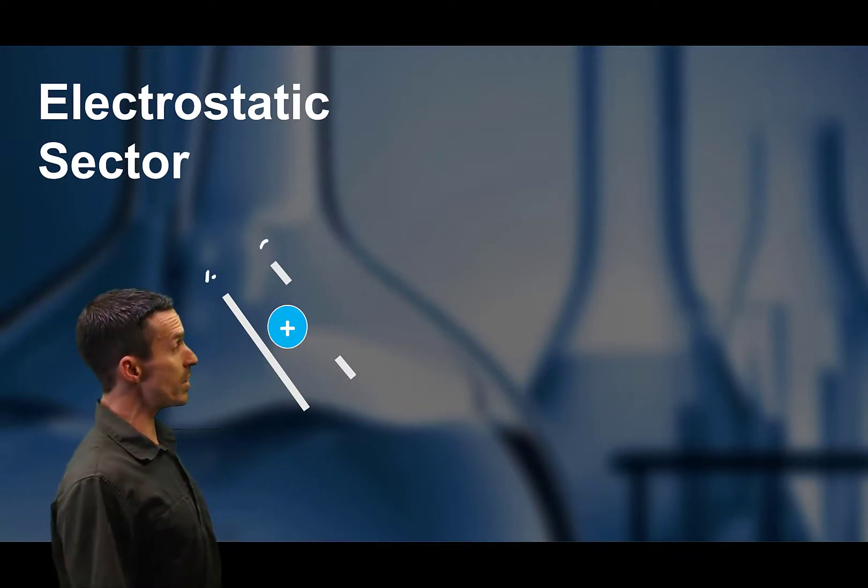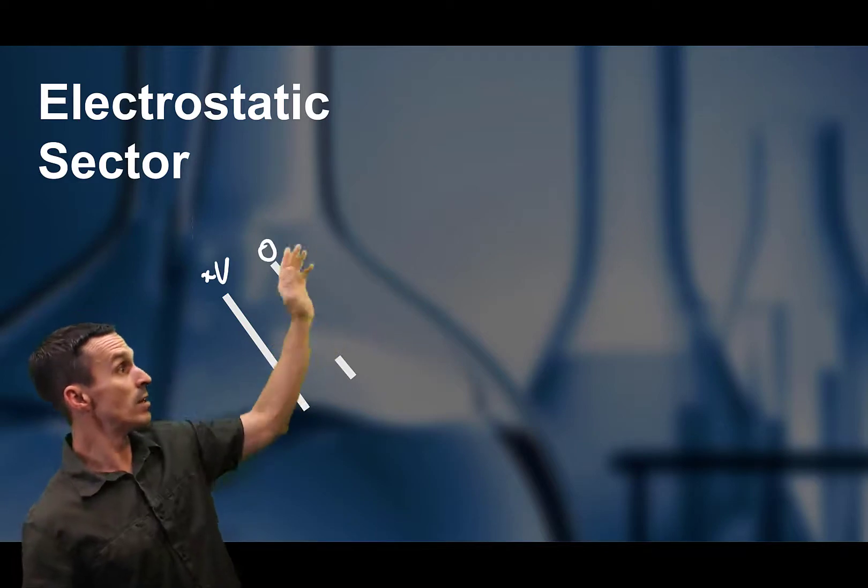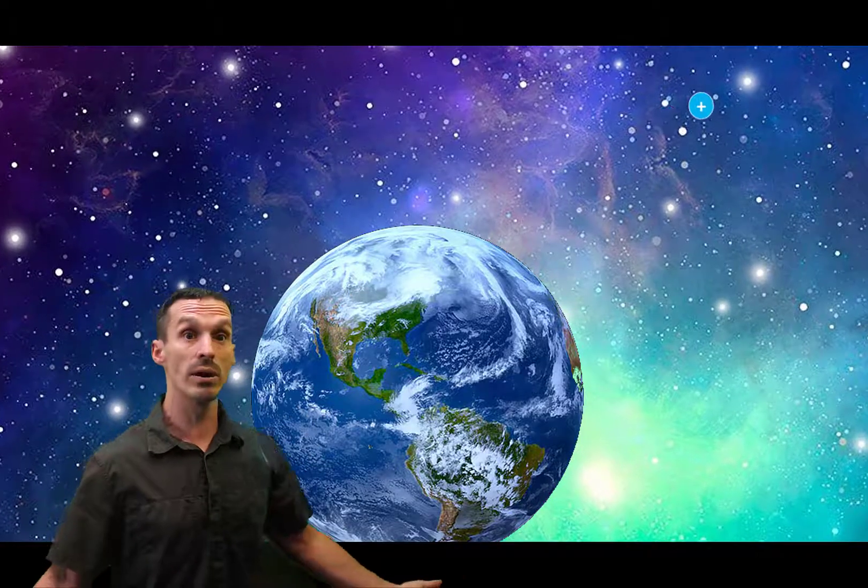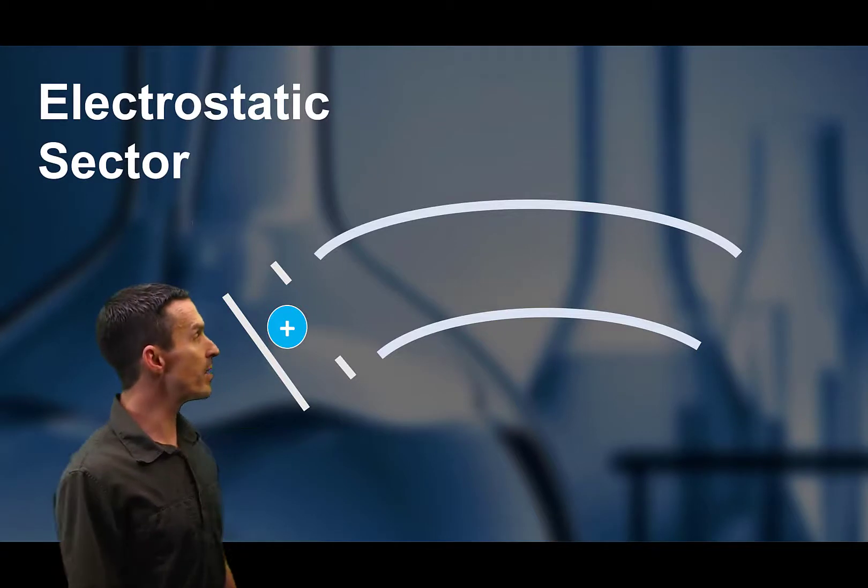So check out this configuration here, same voltage system. You turn the volts on, the ion just heads uphill. It just keeps going and going. It's sort of never going to stop, right? So let's just put something in the way.